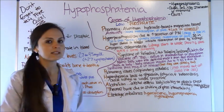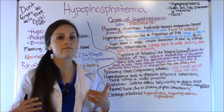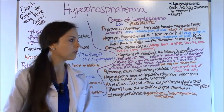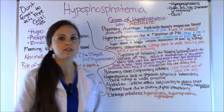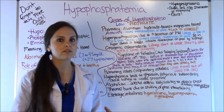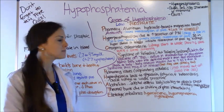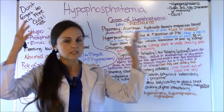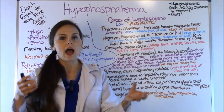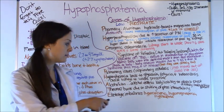A is for alcoholism. Alcohol has a big effect on the body's ability to absorb phosphate, and patients with alcoholism are already malnourished and depleted of all those essential electrolytes, so they are definitely at risk. T is for thermal burns — when a patient has extreme burns all over the body, this causes shifting of phosphate out of the blood and into the cells, dropping phosphate levels in the blood.